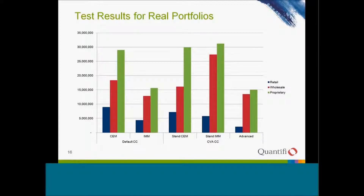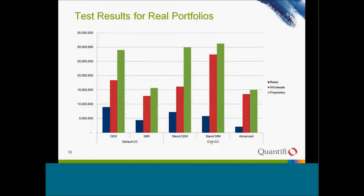Blues are always lower than reds, and reds are lower than greens. The two leftmost groups are default capital charges — these are Basel II capital charges — and the remaining three are CVA capital charges. To get the total, you add them: IMM with advanced, or IMM with standard, or CM with standard CM. So we have three total combinations.